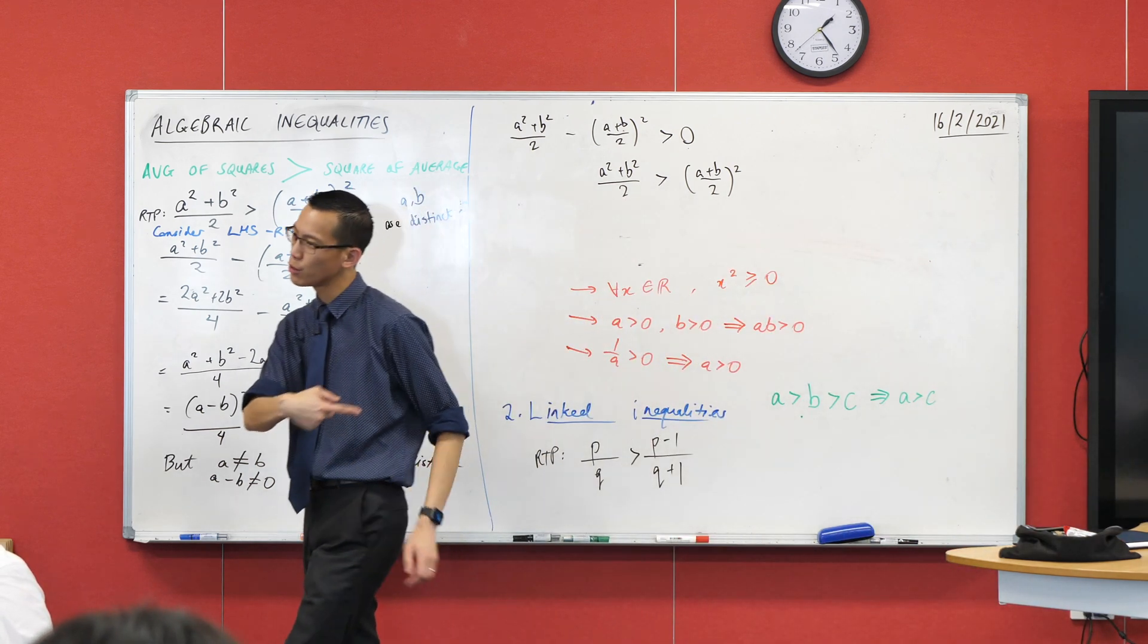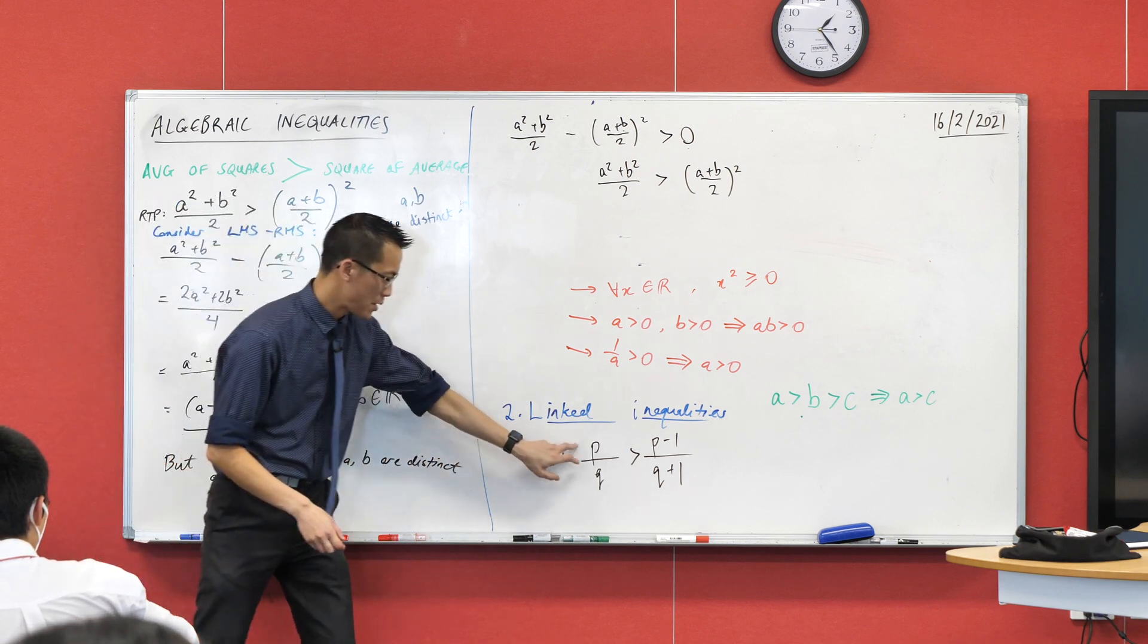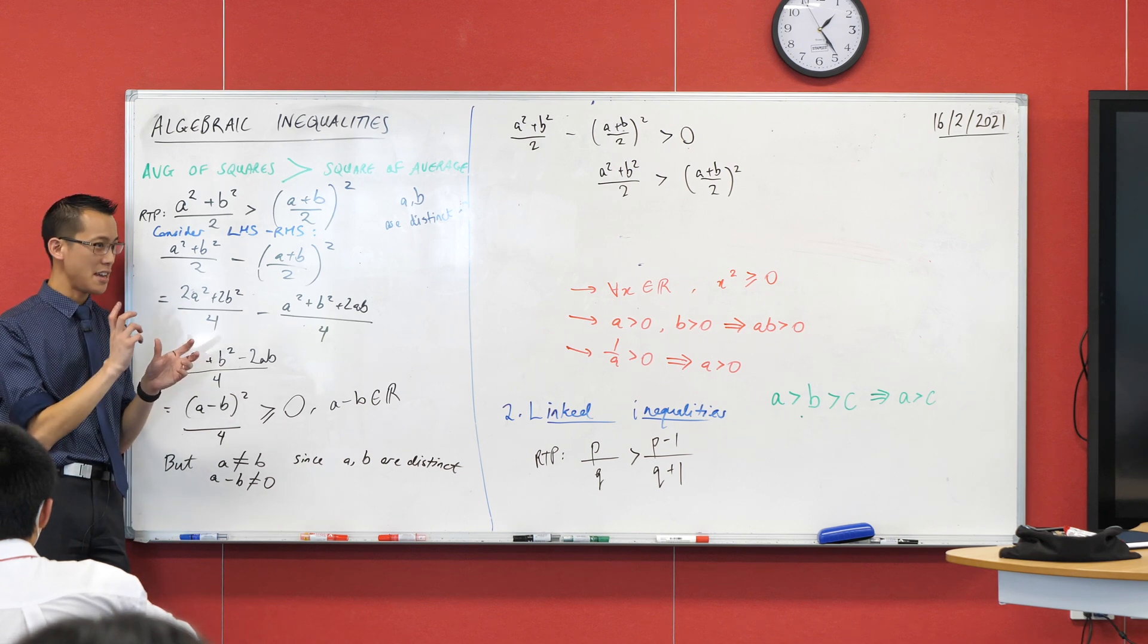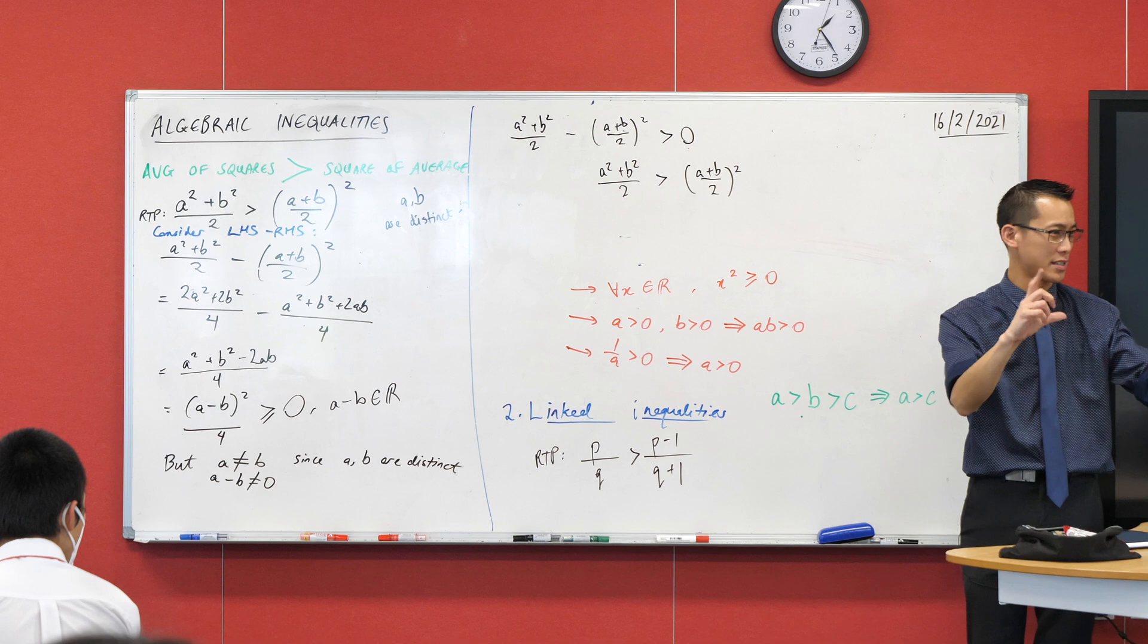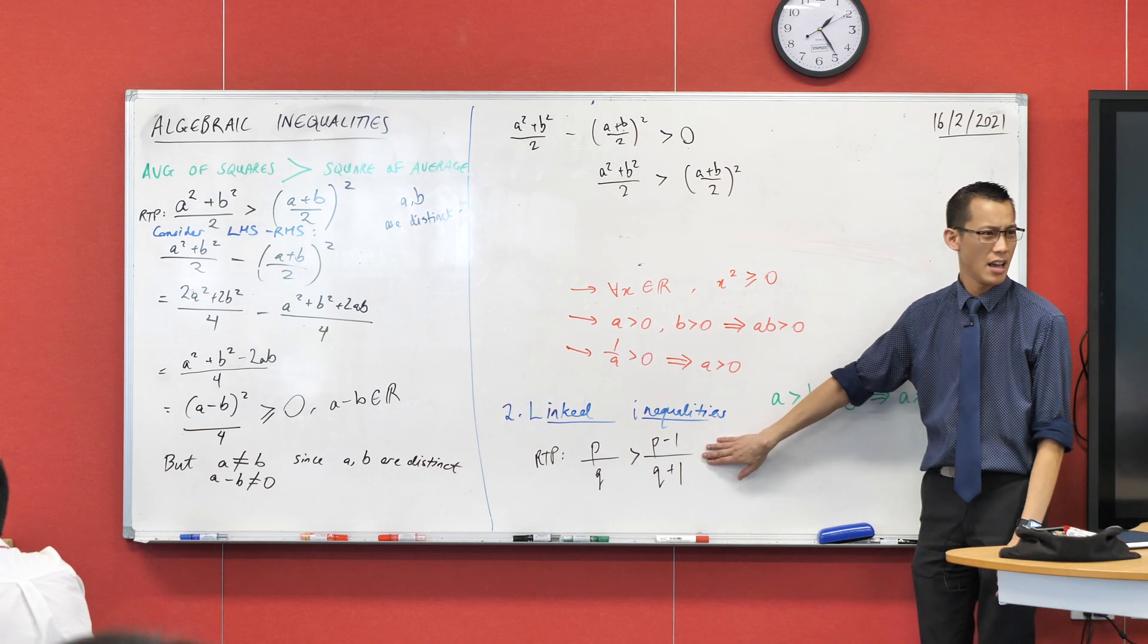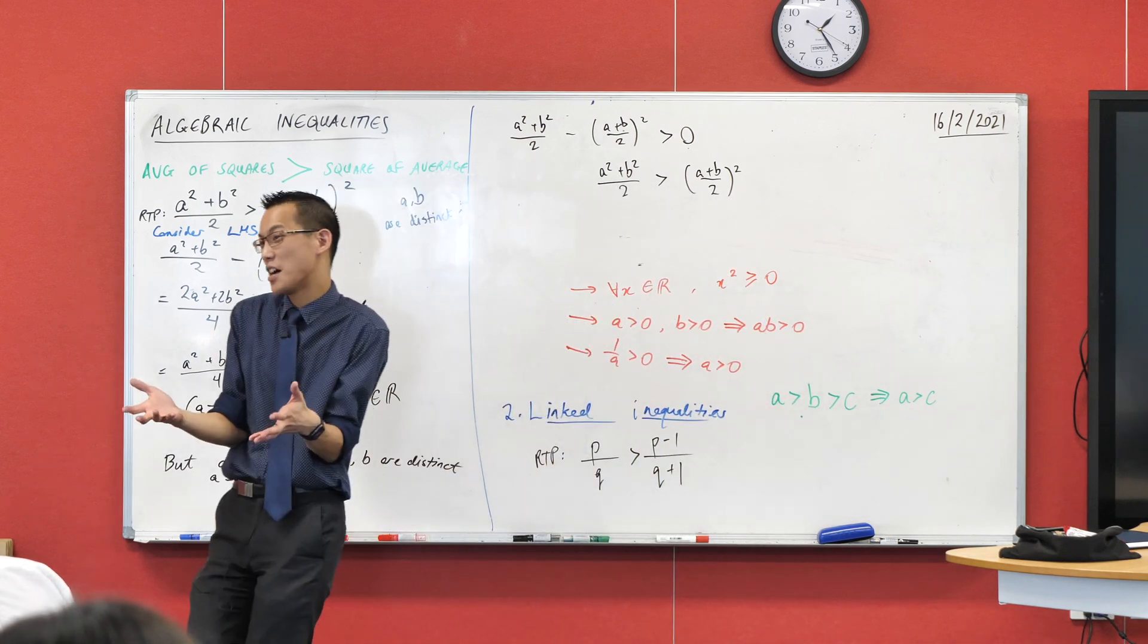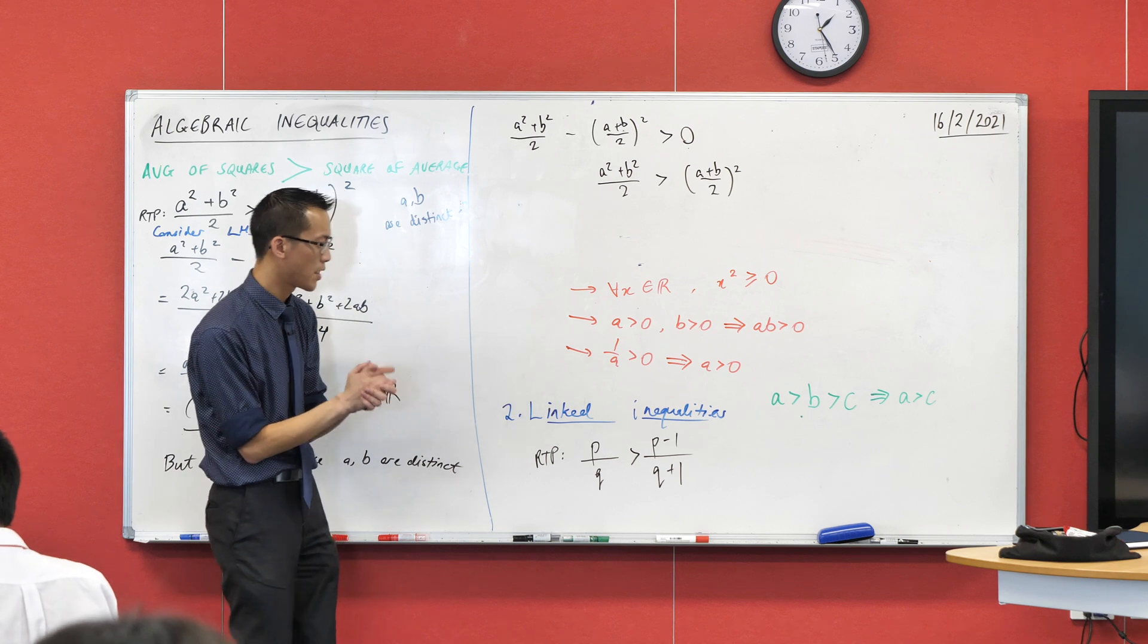Really quick example - have a look at this inequality with P's and Q's. I want to prove that P over Q is going to be greater than this fraction here. If all you knew about was the strategies we looked at before, you're somewhat in trouble. You might say 'I'll do my left-hand side takeaway right-hand side thing.' Just write down the first line and think about where you're going to go next. It just ends up a mess of P's and Q's - there's no obvious squares, there's no obvious reciprocals, you're just like 'I don't know what to do here.'